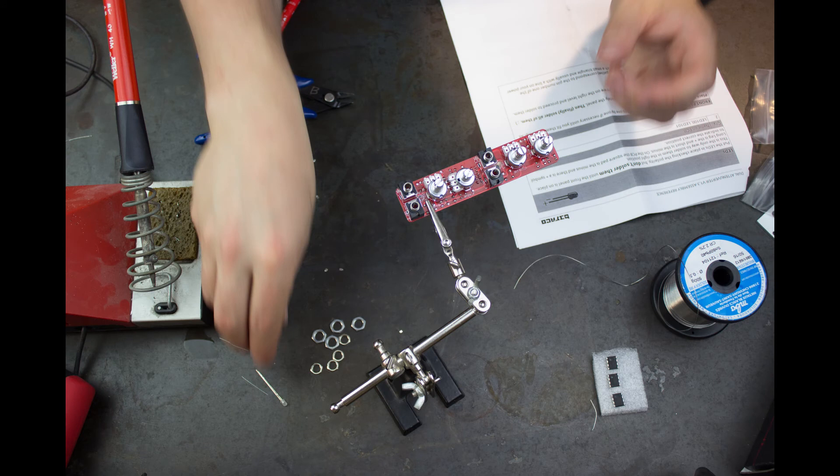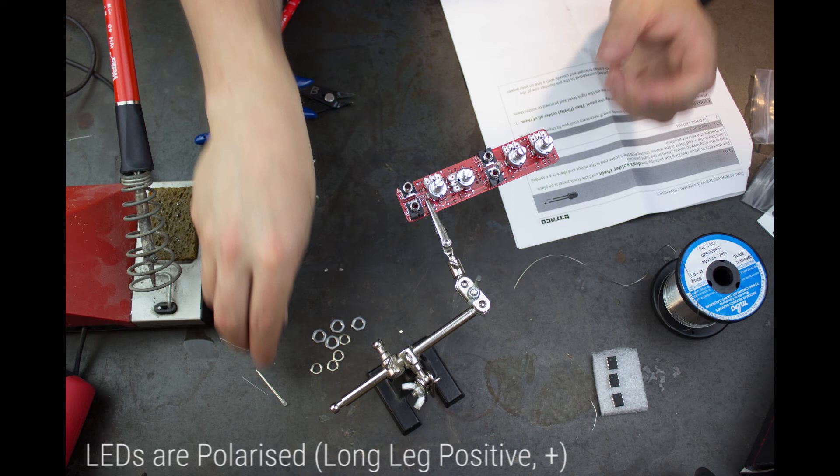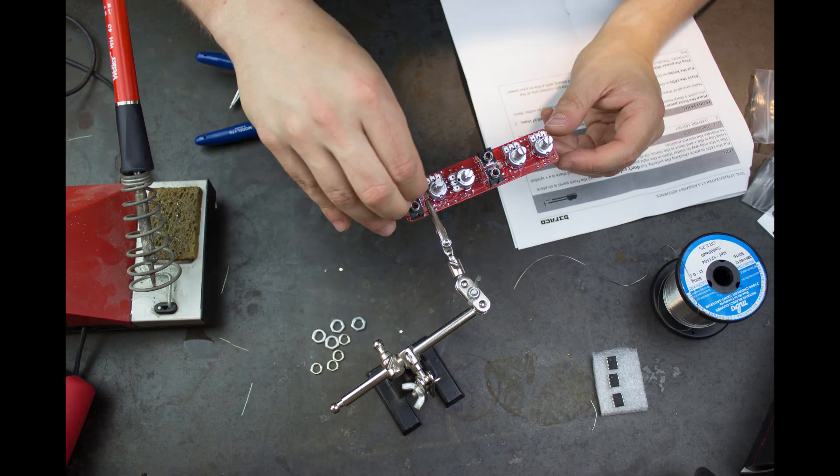The last panel mounted components we have to add are the light emitting diodes or LEDs. These are a type of diodes so they are polarized and similar to the capacitors. They have one leg longer than the other to identify the positive side. On the PCB there should be a plus or minus to indicate the polarity.